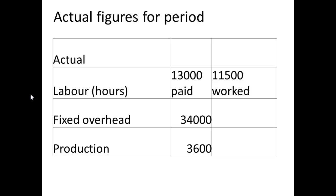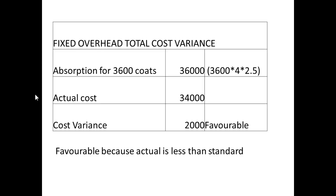Let's take the actual figures for the period again. We have 13,000 paid hours, 11,500 worked hours, a fixed overhead of £34,000 as the actual cost, and production of 3,600 coats. For the fixed overhead total cost variance: if we work out the absorption expected for 3,600 coats, we multiply 3,600 times 4 times £2.50, or 3,600 times £10, which gives £36,000. The actual cost was £34,000, so the variance is £2,000, which is favourable because the actual is less than the standard.